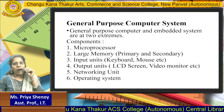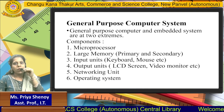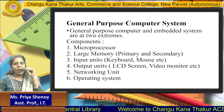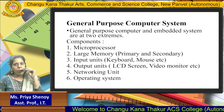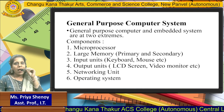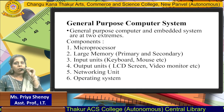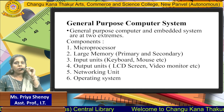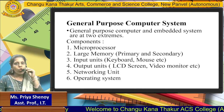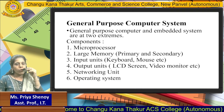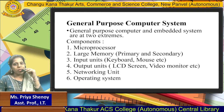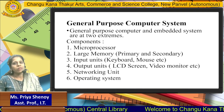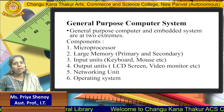First we will start with what a general purpose computer system is. A general purpose computer system will basically consist of a microprocessor, a large memory — the memory will be of two kinds: primary memory as well as secondary memory. Then there will be input units such as keyboard, mouse, scanner, etc., and output units such as an LCD screen, video monitor, etc., a networking unit, and the main part is the operating system.